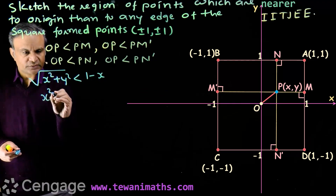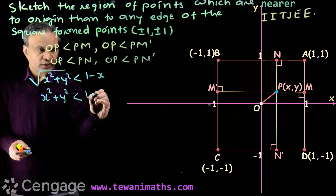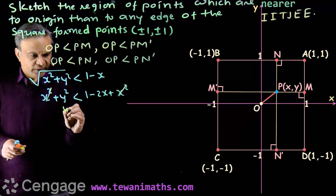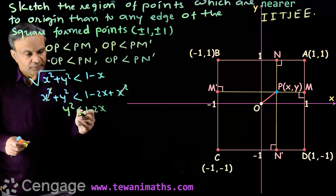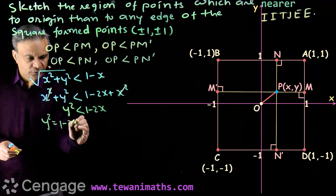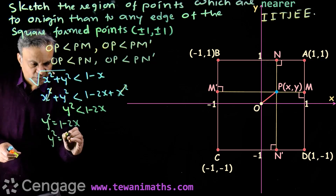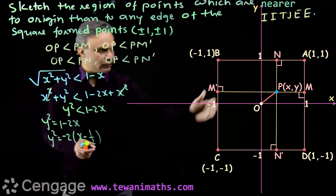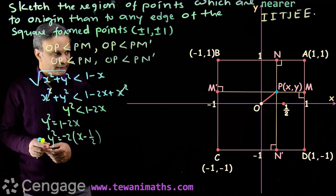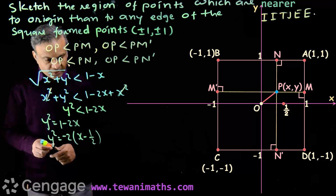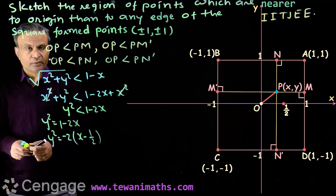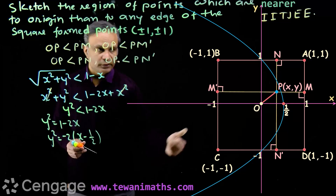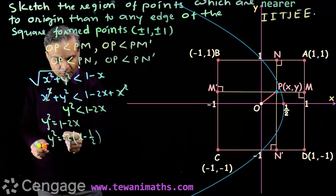We square both sides and get X squared plus Y squared less than 1 minus 2X plus X squared. The X squared cancels from both sides, giving the inequality Y squared less than 1 minus 2X. Replacing the inequality with an equals sign gives the parabola Y squared equals minus 2 times (X minus 1/2), which has vertex at (1/2, 0) and axis as the X axis. Putting X equals 0 gives Y squared equals 1, so the parabola intersects the Y axis at (0, 1) and (0, -1). This parabola opens towards the left because of the negative sign.